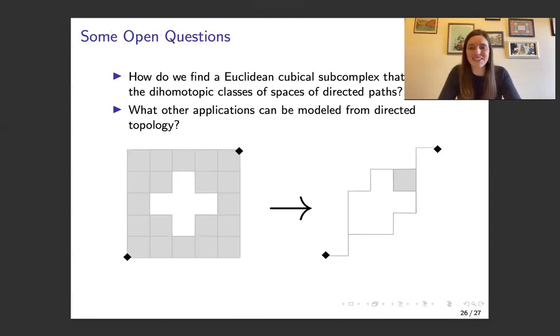And so those are some nice quick overviews of local to global and how we can simplify complexes. And so now here are some open questions. So one is, how do we find a Euclidean cubical subcomplex that preserves the dihomotopic classes of spaces of directed paths? So the examples shown here, we can perform a sequence of those link preserving directed collapses from left to right. And on the right, we can clearly see the two ways to play the spaghetti game. And so that's ideally what we want to do for every complex. So what kind of algorithm can we implement in order to get this nice, small subcomplex?